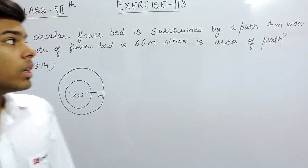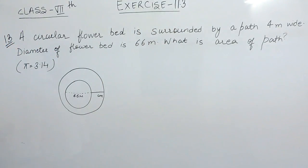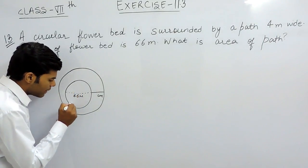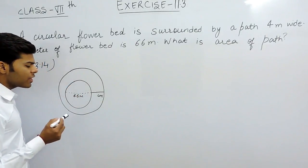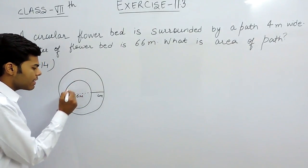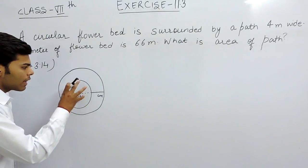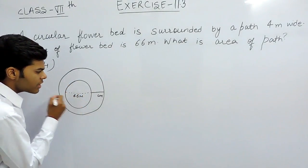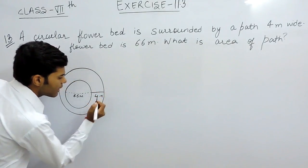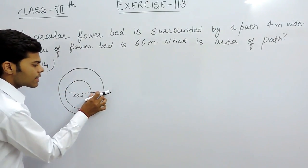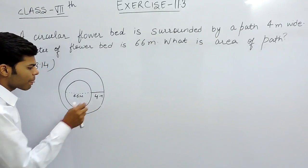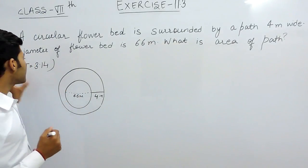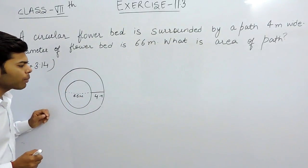Hello everyone. Now we will do the 13th question of Exercise 11.3. The question says there is a flower bed and the diameter of this flower bed is 66 meters. This garden is surrounded by a path which is 4 meters wide. We have to find the area of this path, and we will be taking π as 3.14.